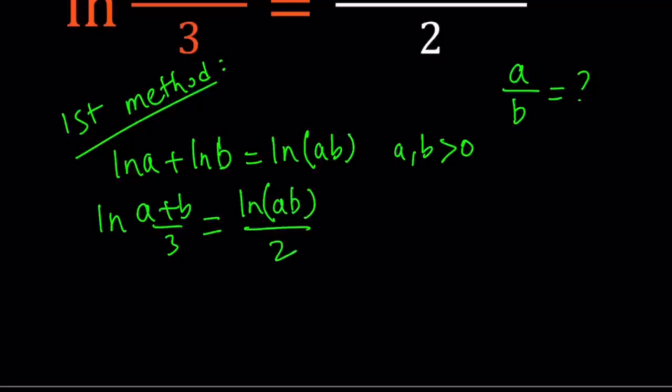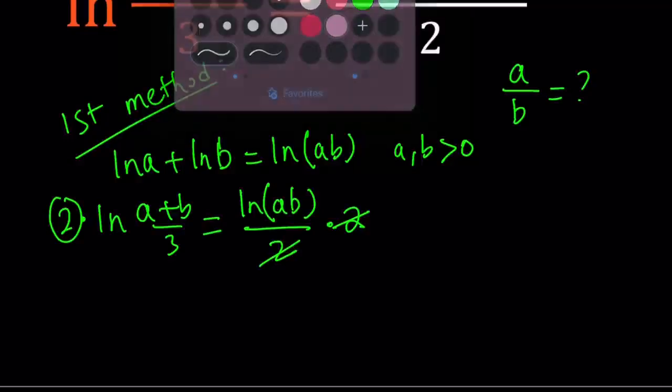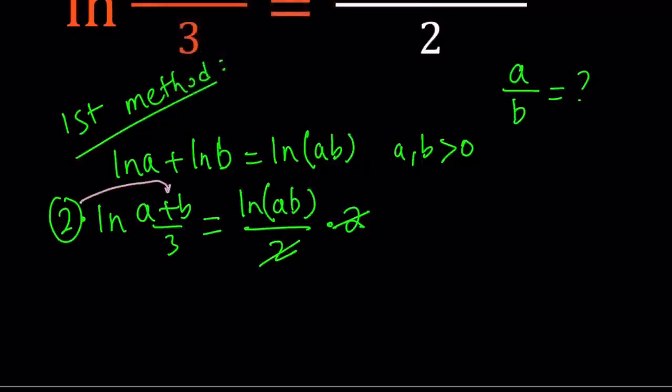Now we have a 2 at the bottom, so we don't really have logs on both sides. Let's go ahead and get rid of the 2. How do we do that? First, let's multiply both sides by 2. 2 is going to cancel out. And then let's use this 2 to make it a power. Again, properties of logs is going to allow us to move the 2 over here as a power. So we can write ln((a+b)/3)² equals ln(ab).